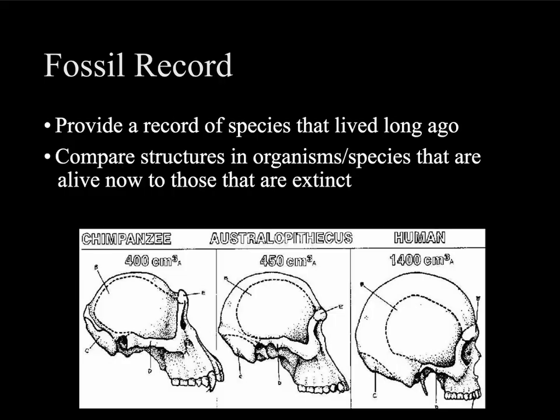What we have here is we can see three skulls: the skull of a human, the skull of a chimp, and Australopithecus, which is an earlier human-like form — another earlier hominid. Chimps, Australopithecus, and humans all have a recent common ancestor, and we can see this by comparing these skulls.